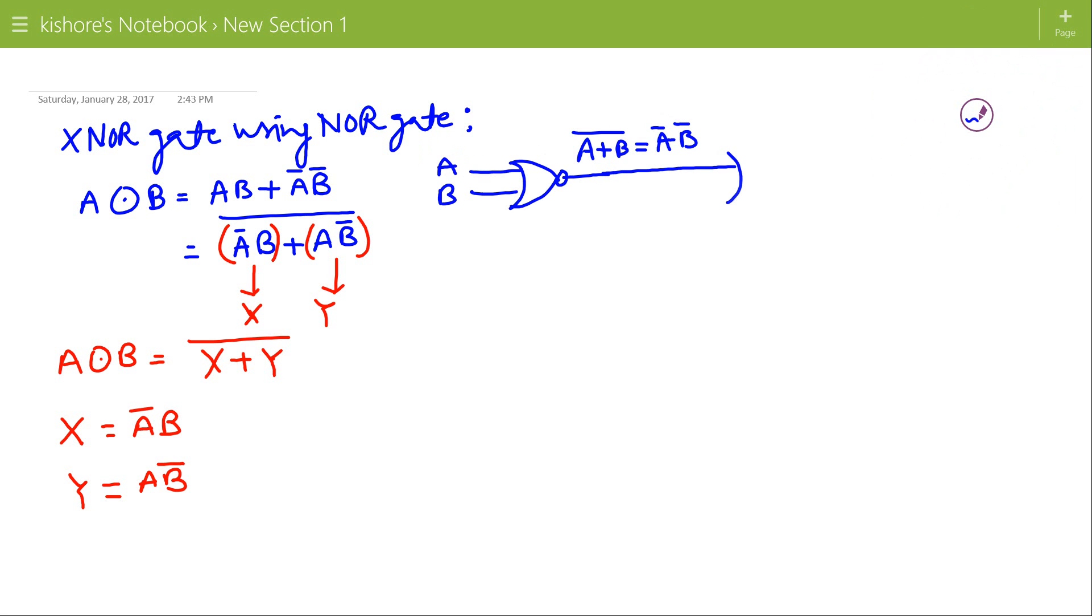This output goes to another NOR gate. Second input to this NOR gate is A, so output is A bar B bar plus A whole complement, which is applying the distribution property A plus A bar into A plus B bar whole complement. And A plus A bar is 1, so this is A plus B bar complement.